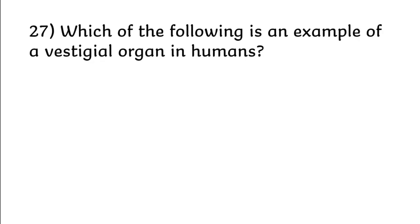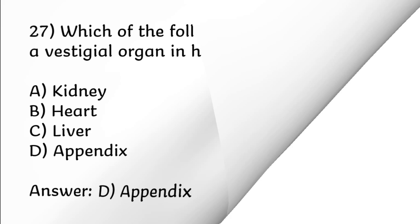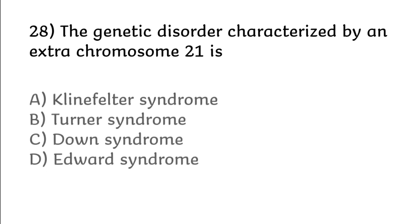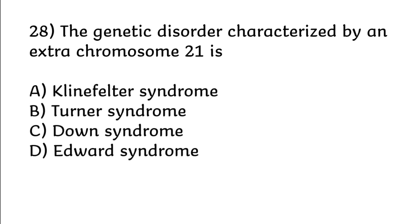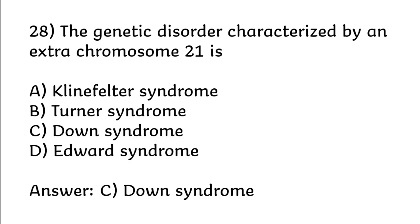Which of the following is an example of a vestigial organ in humans? Options: kidney, heart, liver, appendix. Correct answer is option D: appendix. The genetic disorder characterized by an extra chromosome 21 is: Klinefelter syndrome, Turner syndrome, Down syndrome, Edward syndrome. Correct answer is option C: Down syndrome.